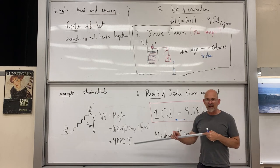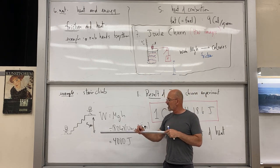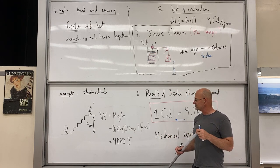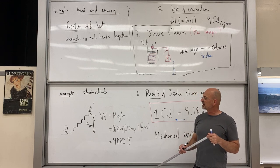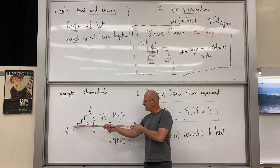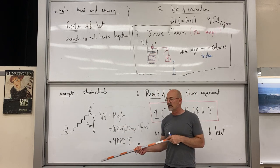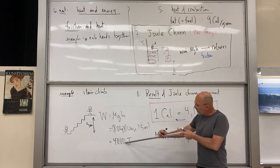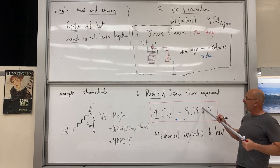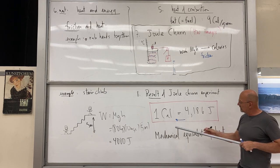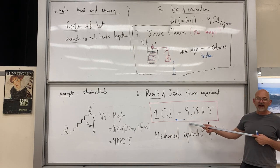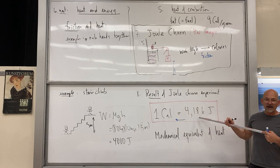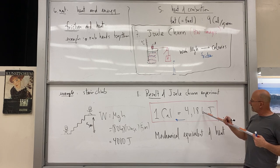Our body uses more than one calorie per stair climb because it's doing much more than just climbing stairs — it's keeping blood circulating and all functions running, which takes energy too. Our later goal will be to reverse the direction of the arrow — somehow burn fuel and get useful work out of it. For now, we know that friction work produces heat.